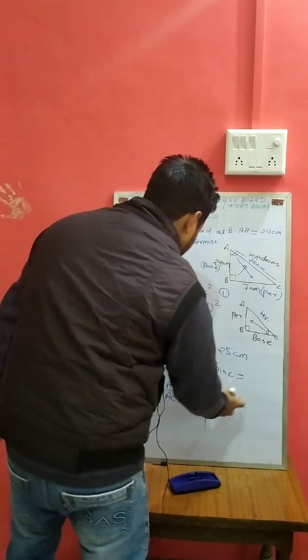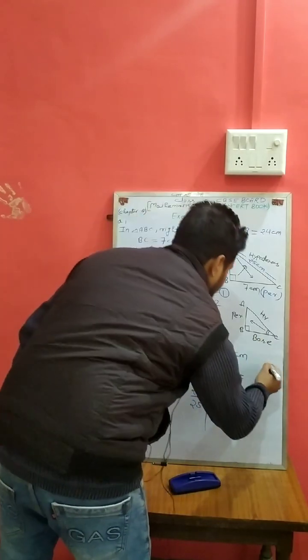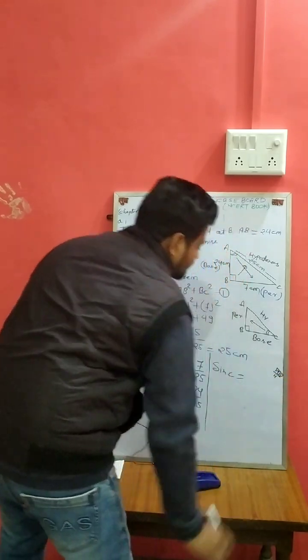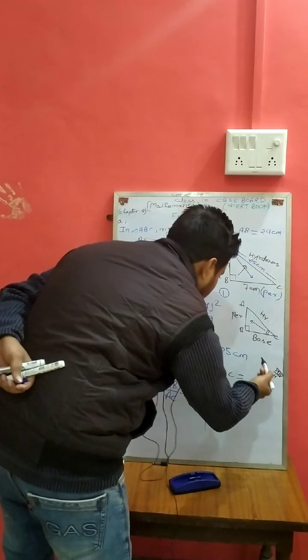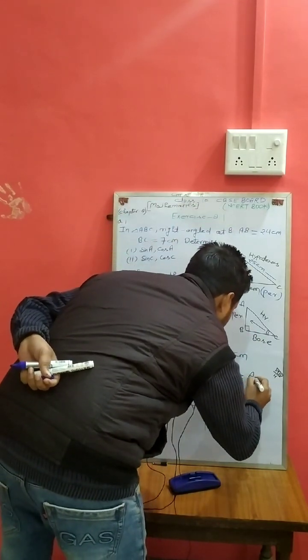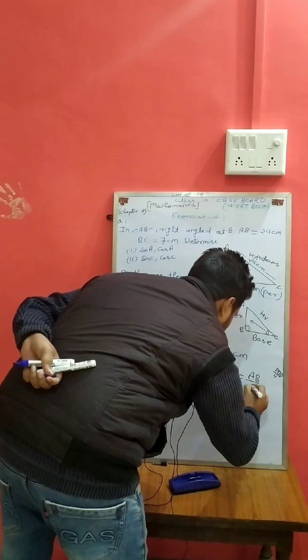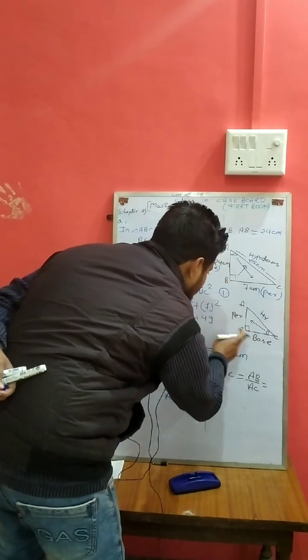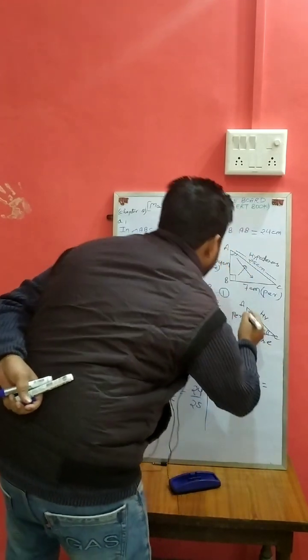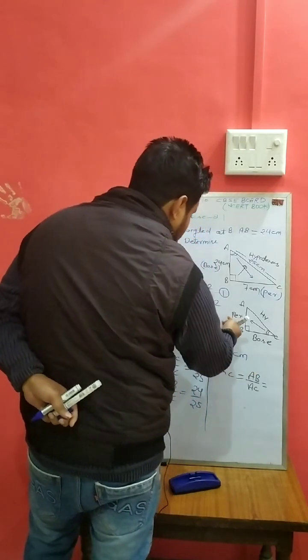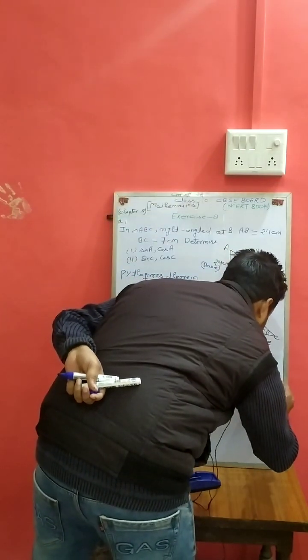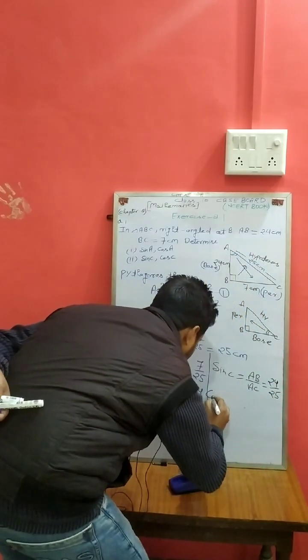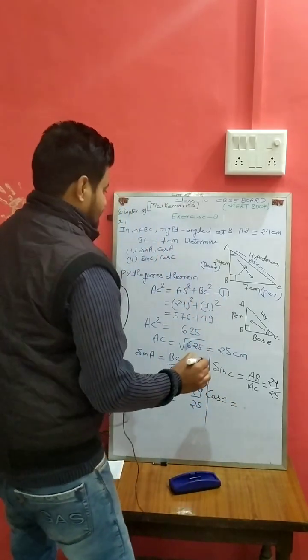So sin C, in this case, perpendicular upon hypotenuse. Now this case, perpendicular is AB, upon hypotenuse AC. AB upon AC is 24 upon 25.